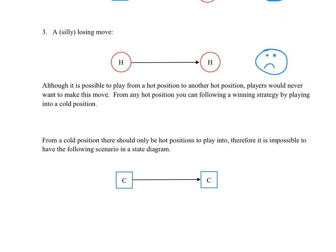Moving forward: there is no way that a cold position will ever show up next to another cold position in a state diagram. In other words, it's not possible to play from cold to cold. This violates the definition of what it means to be cold — from a cold position, every way of playing is supposed to be hot. So it doesn't make sense for a cold position to play into another cold position.